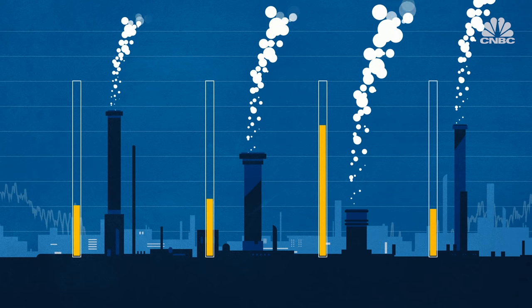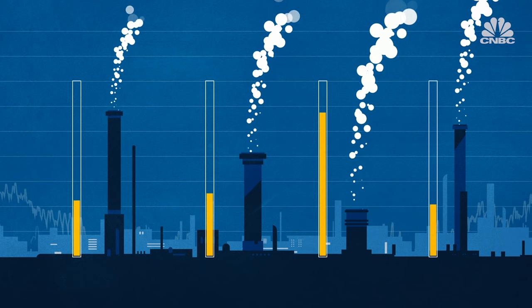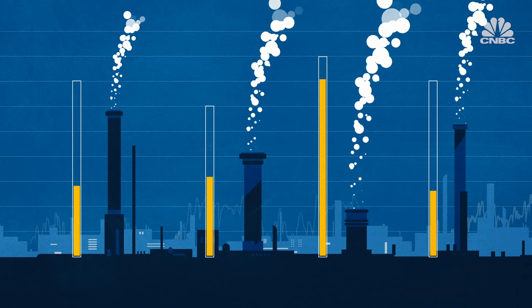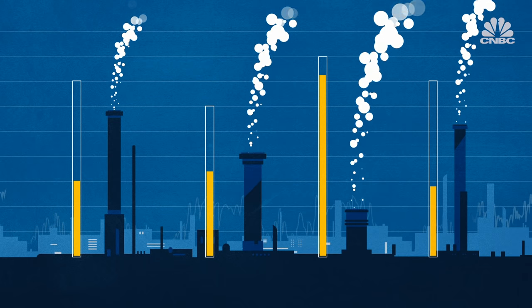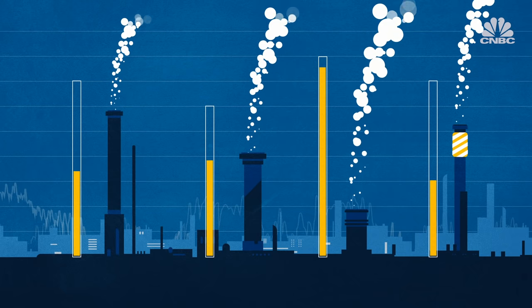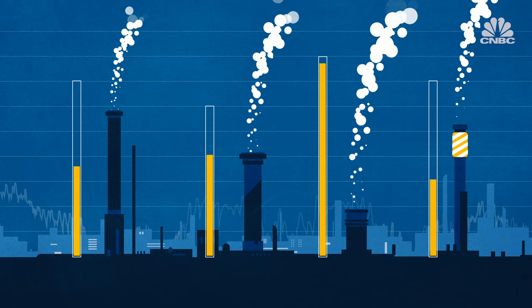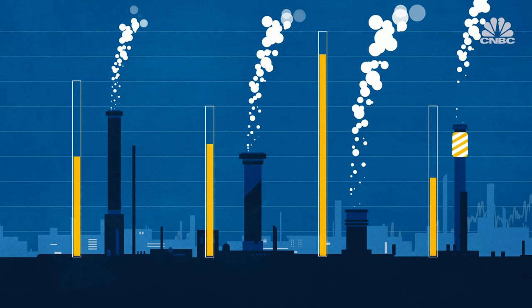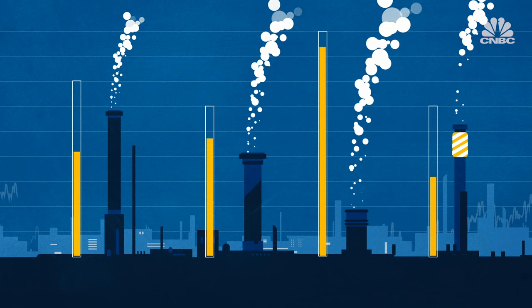For example, if a company knows they have gone over their allowance, they will need to buy more carbon units from the carbon market. But if they implemented measures to reduce their emissions, they can sell any excess units on the market.